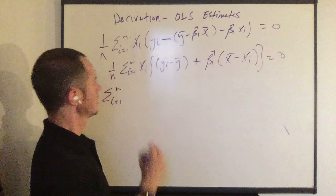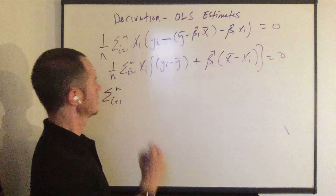Using our estimates of beta naught and beta one, we can compute the fitted values of the dependent variable. We have y_i hat equals beta naught hat plus beta one hat times x_i. The predicted value of the dependent variable equals the estimated intercept plus the estimated slope times the value of the independent variable. For example, wage hat equals beta naught hat plus beta one hat times education_i — so the predicted wage of individual i equals beta naught hat plus beta one hat times their level of education.